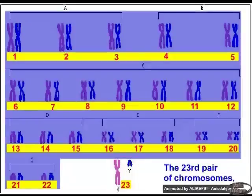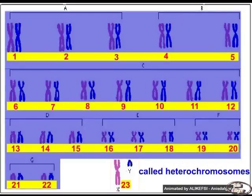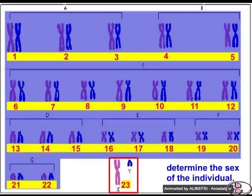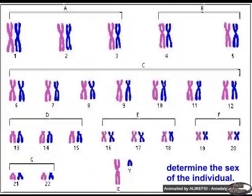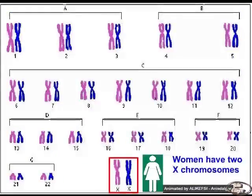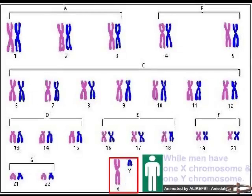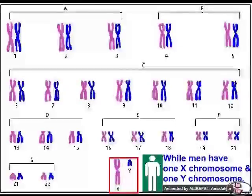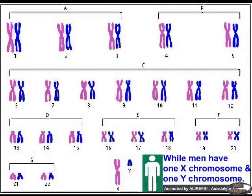The 23rd pair of chromosomes, called heterochromosomes or sex chromosomes, determines the sex of the individual. Women have two X chromosomes, while men have one X chromosome and one Y chromosome.